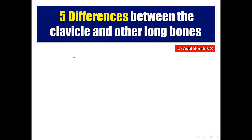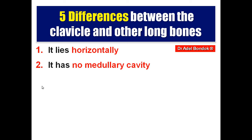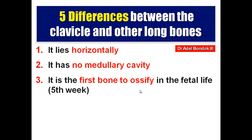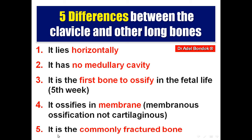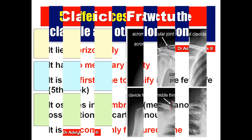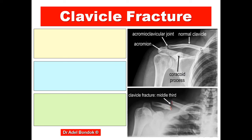There are five differences between the clavicle and other long bones: first, the clavicle lies horizontally; second, it has no medullary cavity; third, it is the first bone to ossify in fetal life, ossifying during the fifth week of intrauterine life; fourth, it ossifies by membranous ossification; and fifth, it is the most commonly fractured bone.